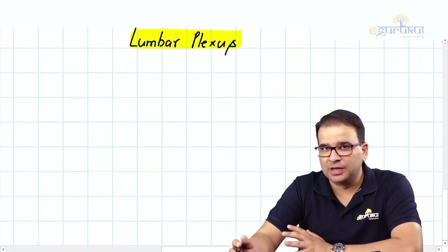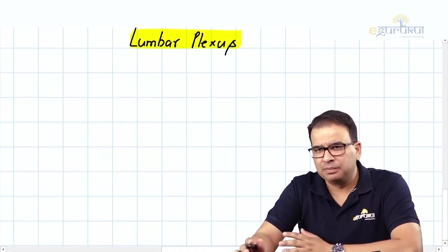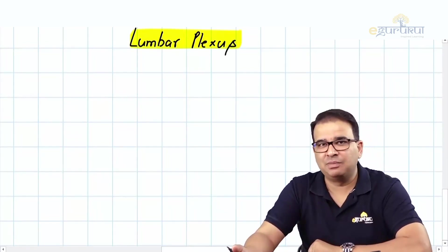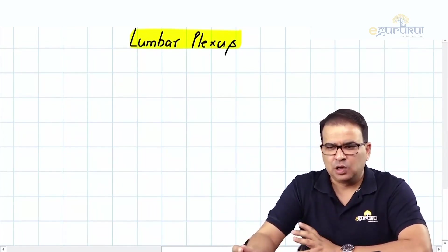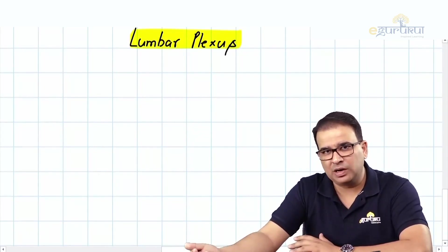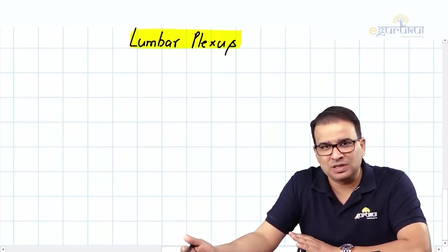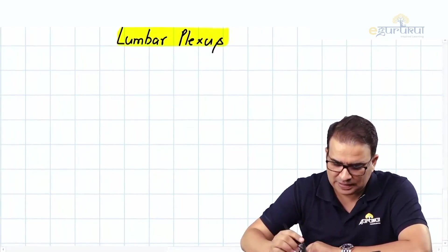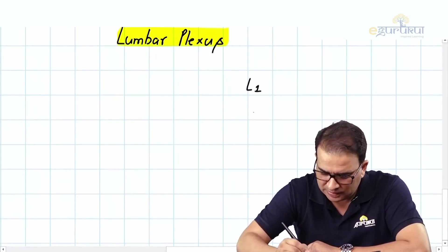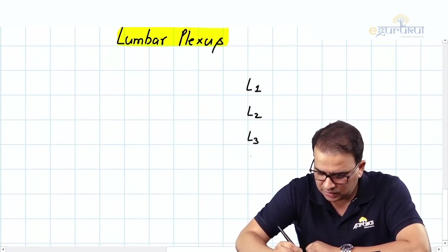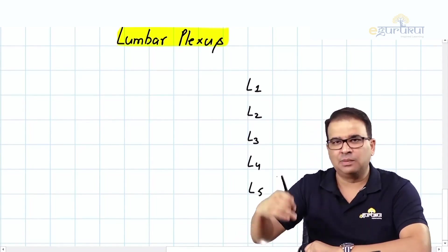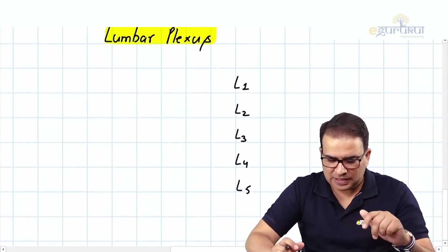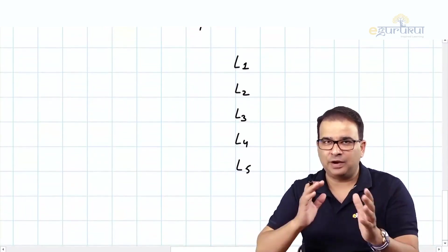To understand the major root values for the nerves present in the lower limb, barring the sciatic, let's talk about the lumbar plexus — just like we talked about the brachial plexus in the upper limb. The major plexus here is the lumbar plexus, although there are two plexuses contributing to the nerves of the lower limb: one is the lumbar and one is the sacral plexus, which we'll talk about a little later. The lumbar plexus is formed by all the lumbar nerves: L1, L2, L3, L4, and L5.